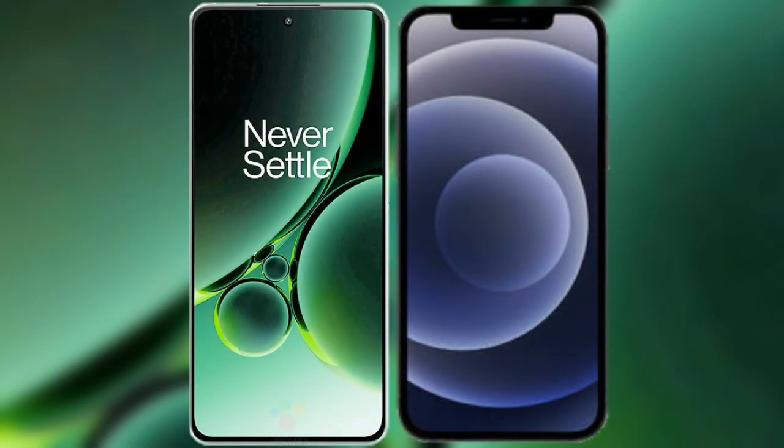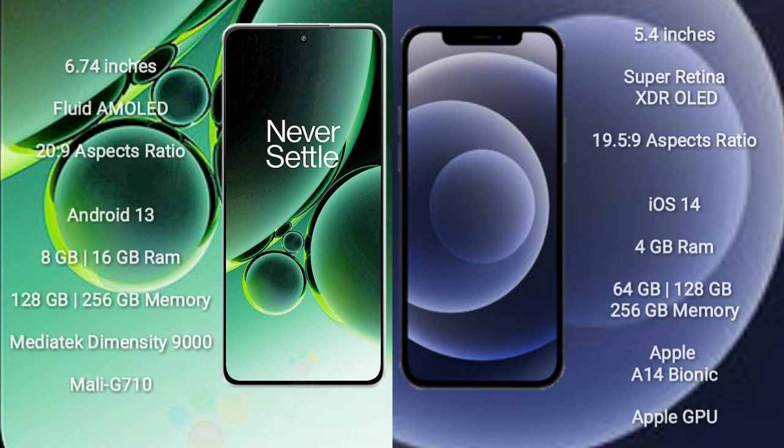I will compare the new OnePlus Nord 3 with iPhone 12 mini. OnePlus Nord 3 comes with a 6.74-inch flat AMOLED display and aspect ratio 20:9. iPhone 12 mini comes with a 5.4-inch Super Retina XDR OLED display and aspect ratio 19.5:9.